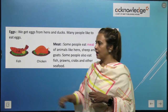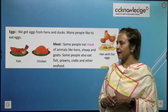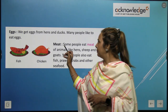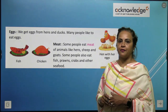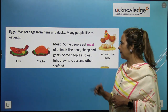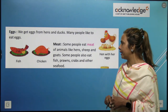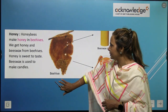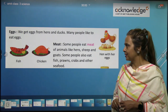We get eggs from hens and ducks. Many people like to eat eggs. Some people eat meat of animals like hens, sheep, and goats. Some people also eat fish, prawns, crabs, and other seafood.